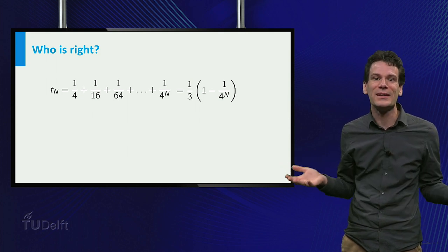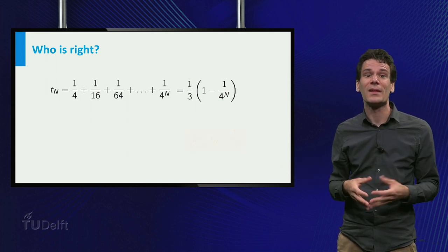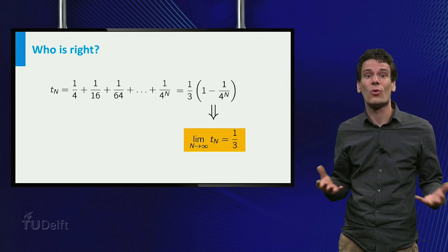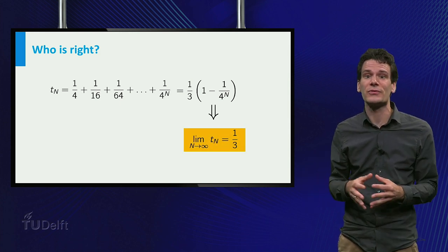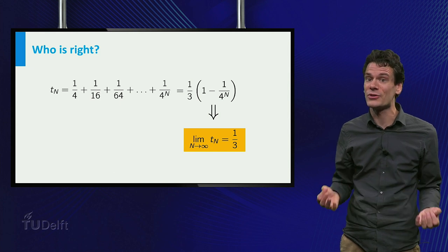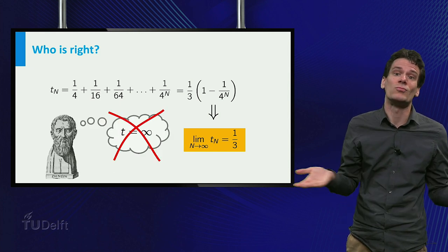Now we simply take the limit of n to infinity and find that it equals 1 third. So all steps together take 1 third of a second to pass. Our common sense was right. Zeno was wrong.